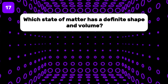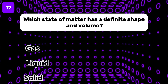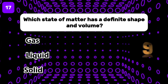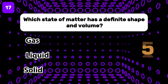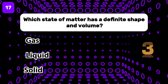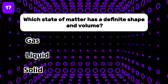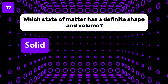Which state of matter has a definite shape and volume? The correct choice is solid.